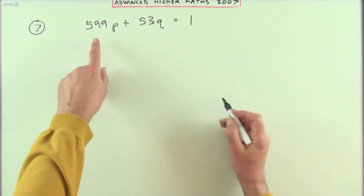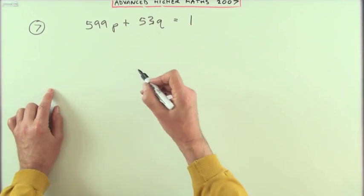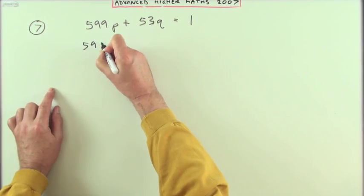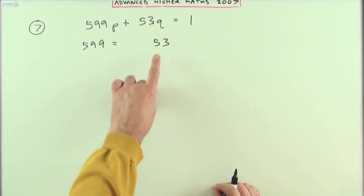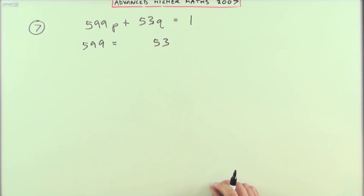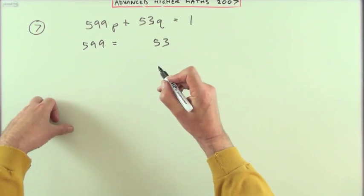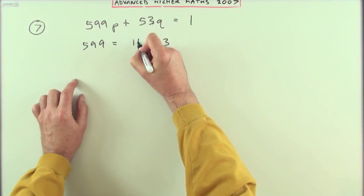The first part will be go through the Euclidean algorithm to find the greatest common divisor. So that's just that division algorithm. How many 53's are in 599? So you put that part in, and that would be 11 of them, because it's more than 10.